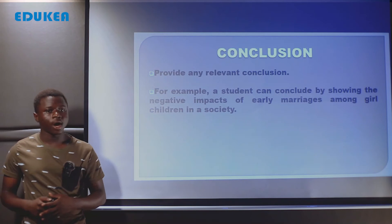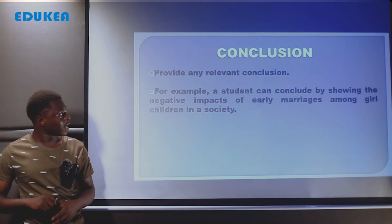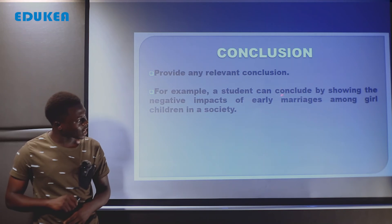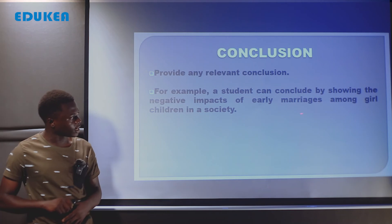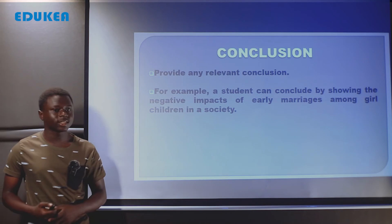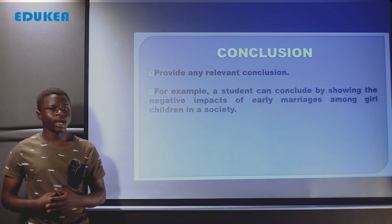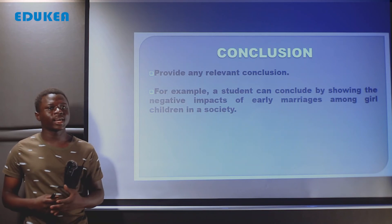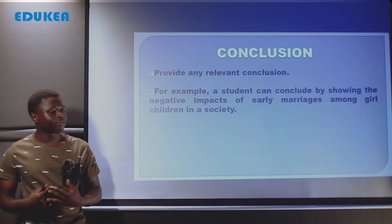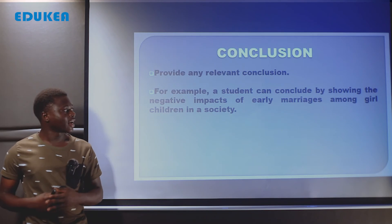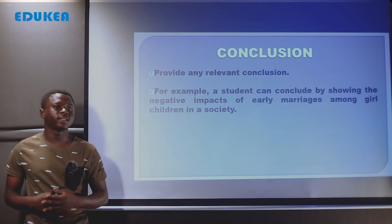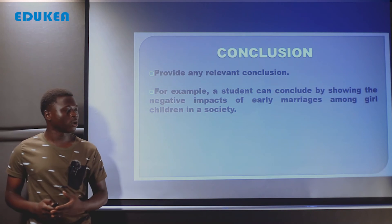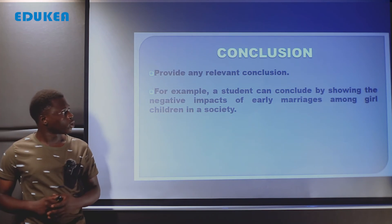After seeing this part, we are now moving to the last part of our question, which is conclusion — hitimisho. Here a student may provide a relevant conclusion. For example, a student can conclude by showing the negative impacts of early marriage among girl children in society, such as denial of the right to education among girl children. A student can conclude in any relevant way.